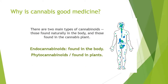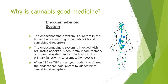So why is cannabis considered good medicine in the first place? There are two types of cannabinoids: those found in the body and those found in plants. These cannabinoids react with our own endocannabinoid system. The endocannabinoid system is involved with regulating things like appetite, sleep, pain, mood, memory, our immune system, and so much more. Its primary job is to promote homeostasis, or balance.